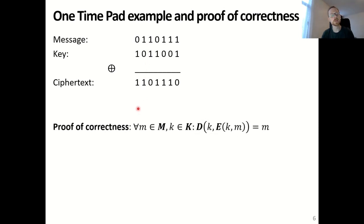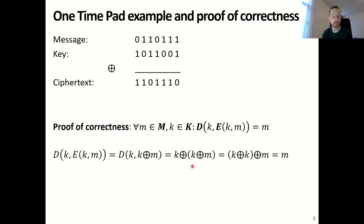Let's look at the proof of correctness of the one-time pad. This is straightforward: we replace the encryption algorithm E and decryption algorithm D in our correctness property with exclusive OR. If we do that, we get k XOR (k XOR m). Due to the properties of XOR, we can regroup the brackets to get (k XOR k) XOR m. The XOR of a bit string with itself gives all zeros, and the XOR of an all-zero bit string with m gives m. So we have shown that encrypting m with k and then decrypting with k gives us m, independent of the value of k.